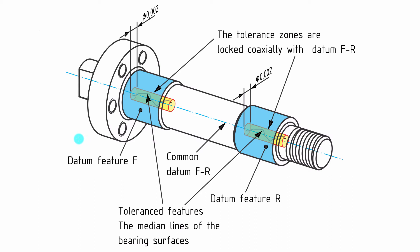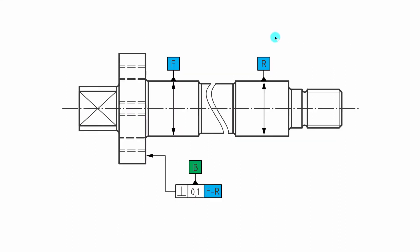We are tolerancing the median lines of the two bearing surfaces back to a datum defined from the two together. In our 3D representation, we have the two bearing surfaces identified as datums — this is datum feature R and this is datum feature F — and from the two we create a common axis. We then have a tolerance zone for the median line of each bearing surface that is aligned with that common datum. This way the two bearing surfaces co-align each other, and they are equal: both function as datum and as tolerance feature.